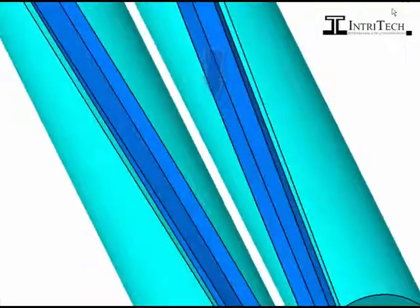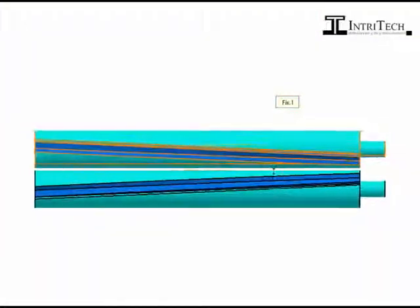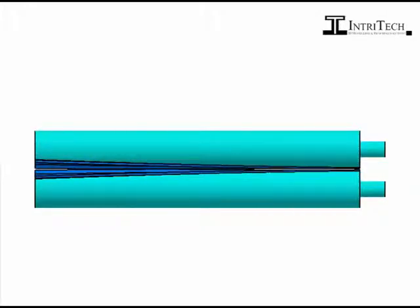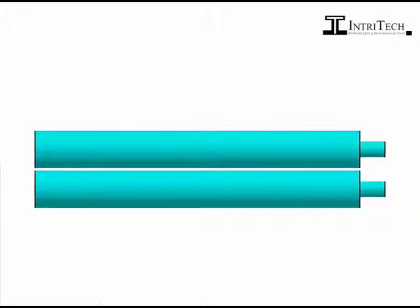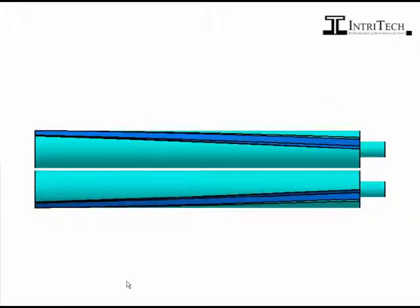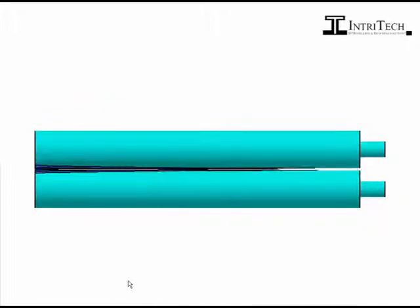Sorry for the jerky transition, but this should give you a better idea. So this is how actually the machine would work. The cutters would be horizontal and the paper would pass from in between them.